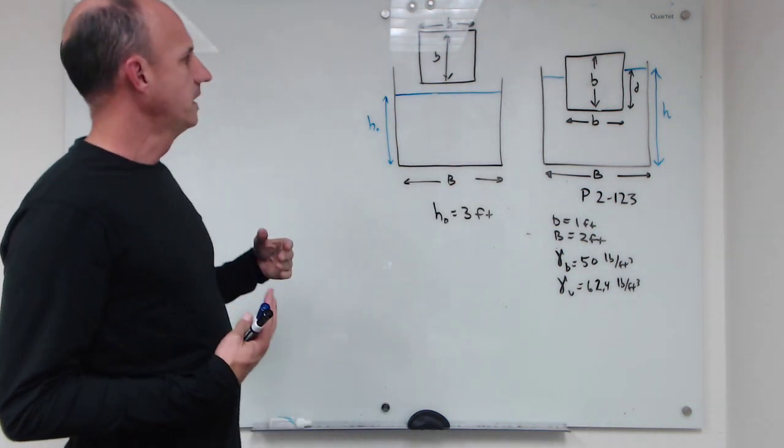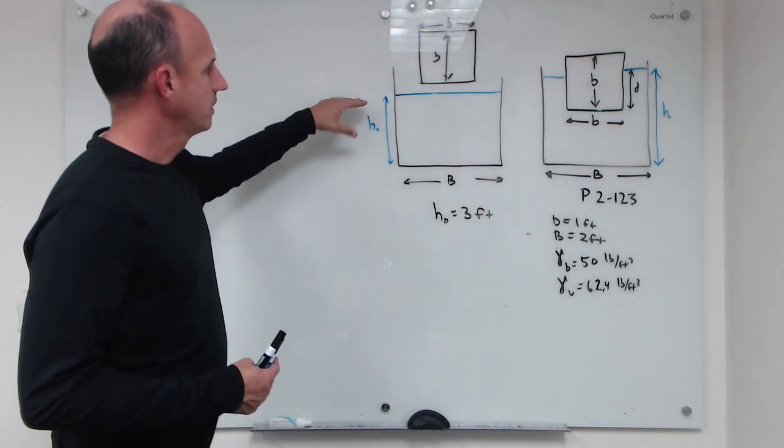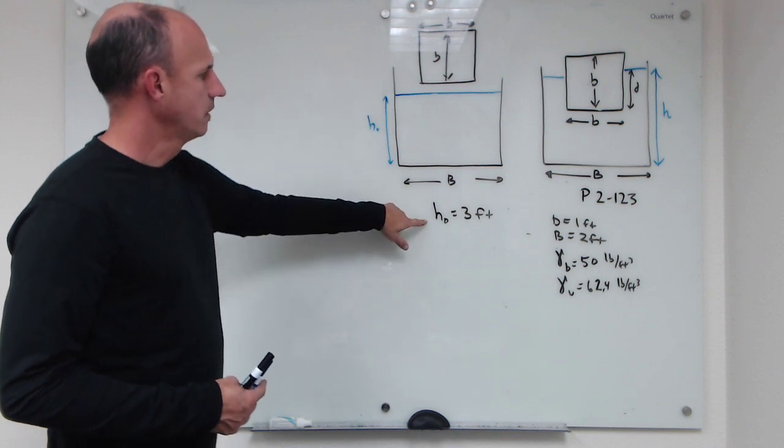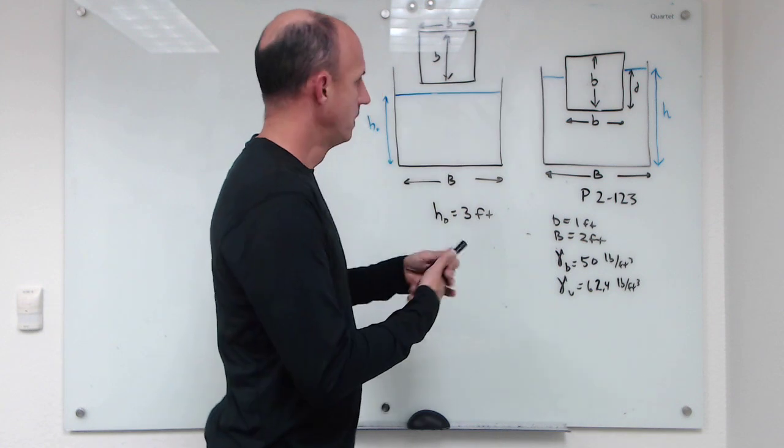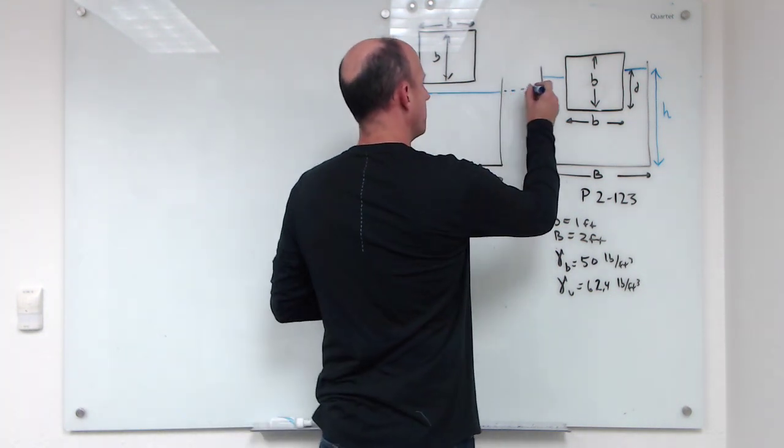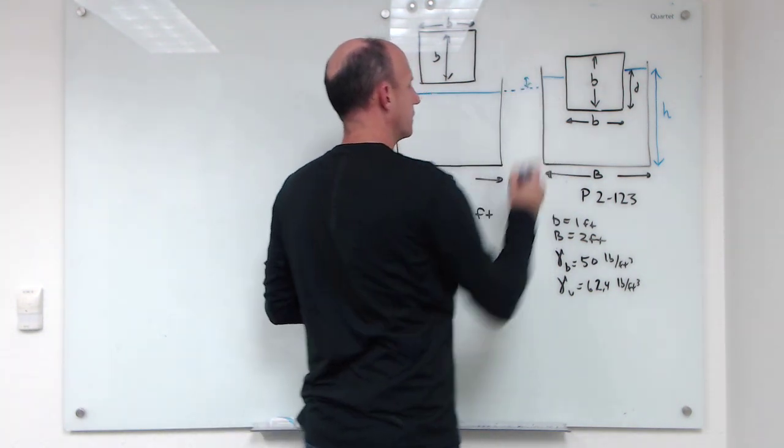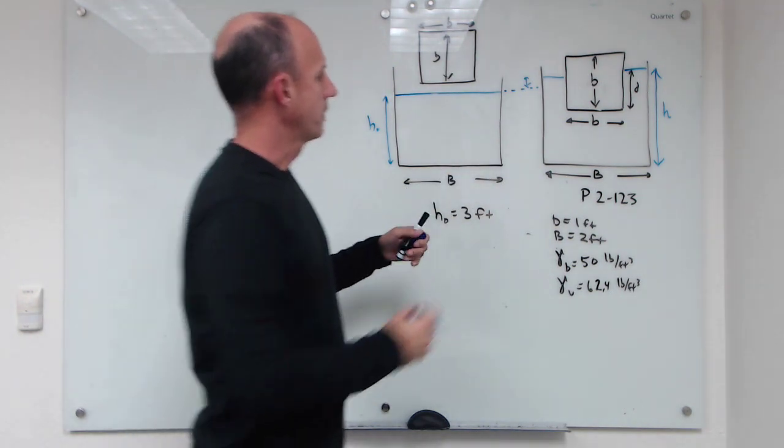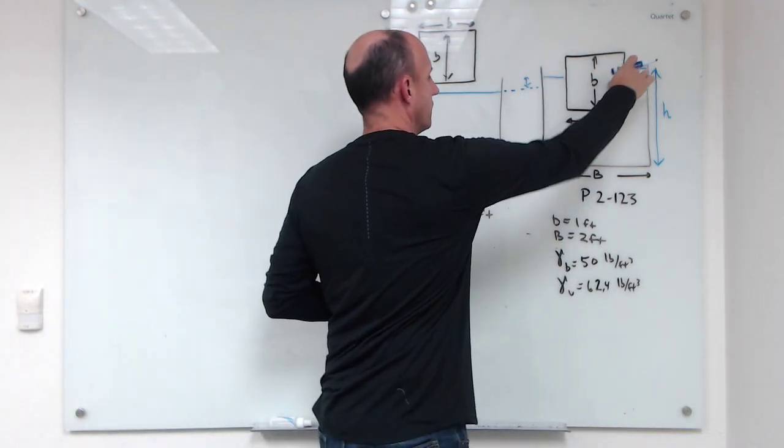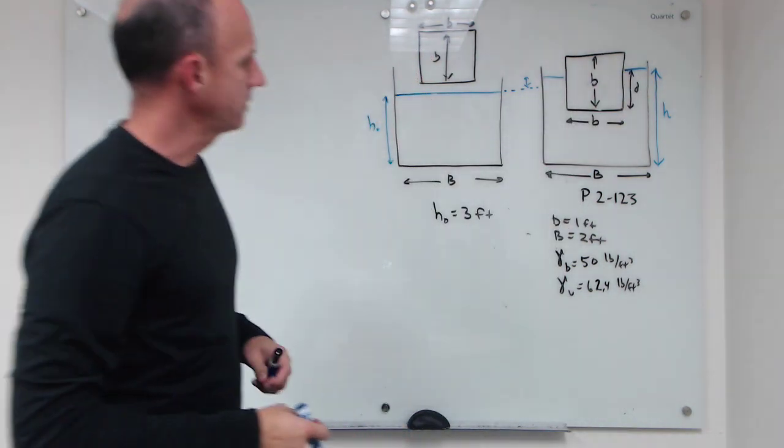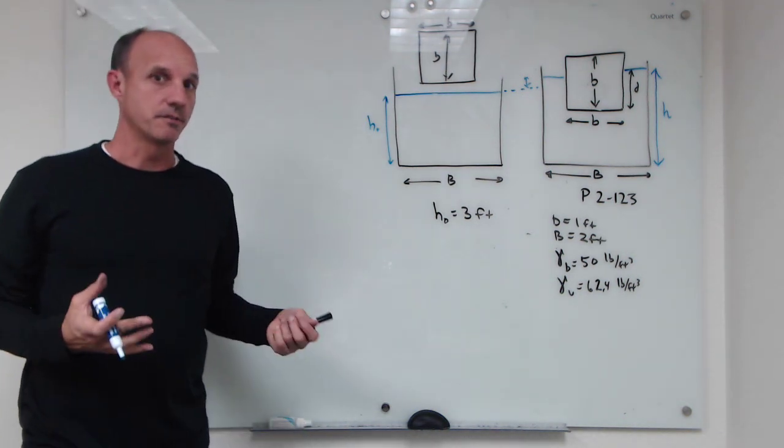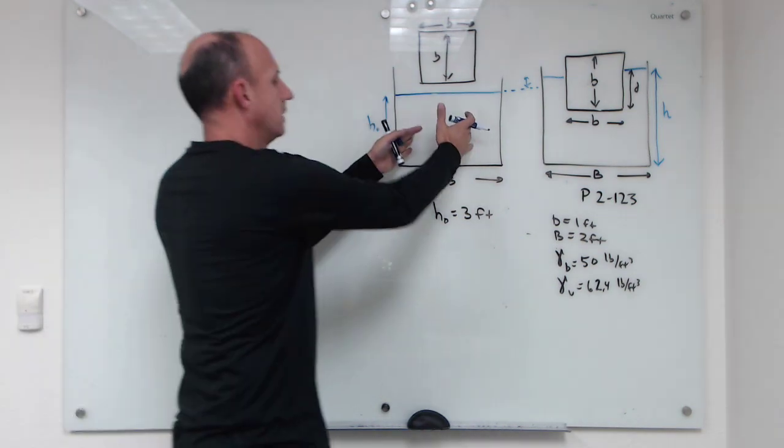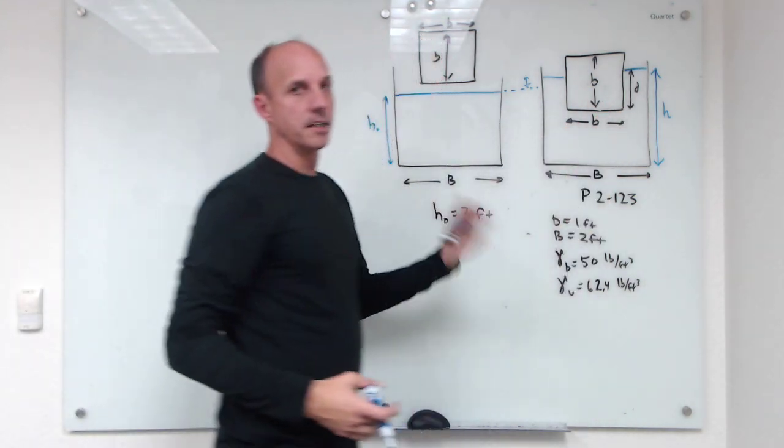We're told that initially the water level in the tank is three feet, so initially we're here at three. After this block goes in, the water level comes up here a little bit. We're expecting a rise, so basically the volume that rises here is going to be similar to what's displaced. So what we're going to do is use a volume conservation principle.